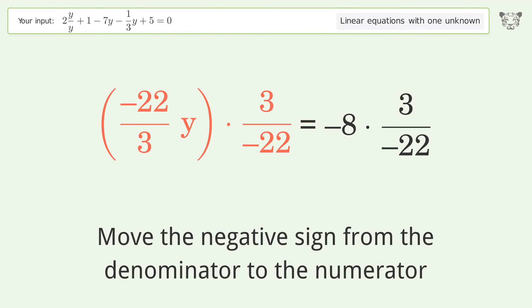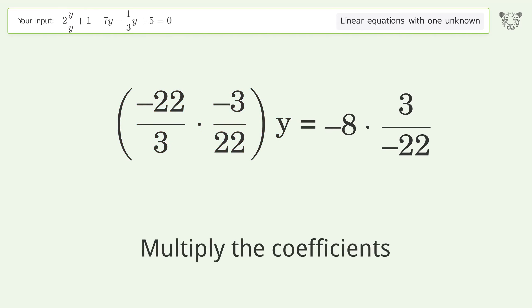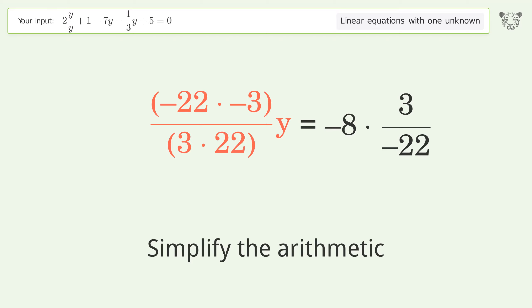Move the negative sign from the denominator to the numerator. Group like terms. Multiply the coefficients. Simplify the arithmetic.